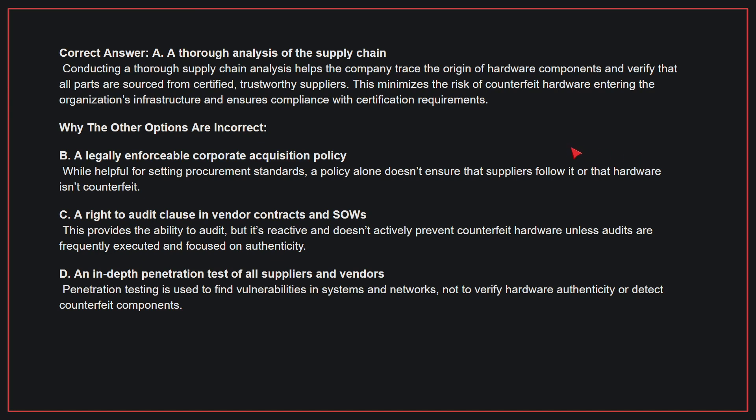Why the other options are incorrect? B: A legally enforceable corporate acquisition policy. While helpful for setting procurement standards, a policy alone doesn't ensure that suppliers follow it or that hardware isn't counterfeit. C: A right to audit clause in vendor contracts and SOWs. This provides the ability to audit but is reactive and doesn't actively prevent counterfeit hardware unless audits are frequently executed. D: An in-depth penetration test of all suppliers and vendors. Penetration testing is used to find vulnerabilities in systems and networks, not to verify hardware authenticity or detect counterfeit components.